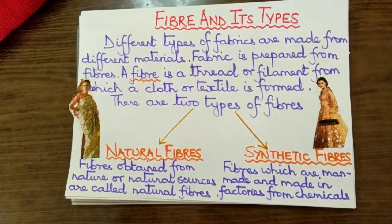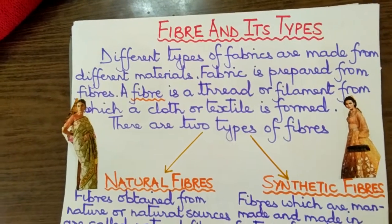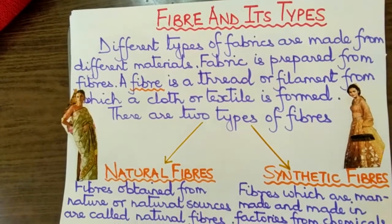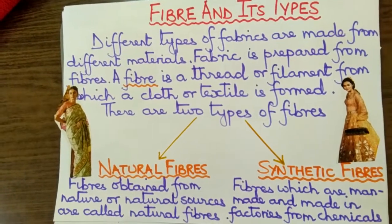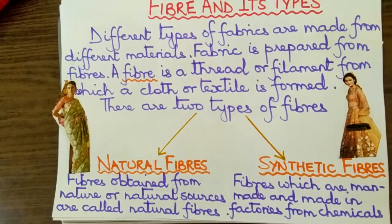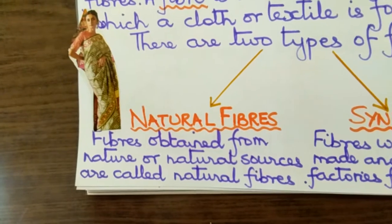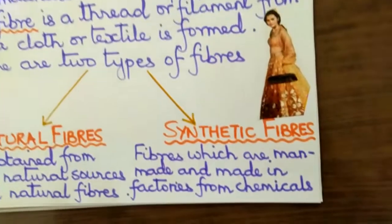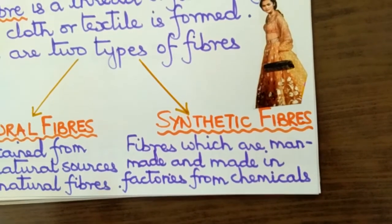Now we are going to know about fiber and its types. Different types of fabrics are made from different materials. Fabric is prepared from fiber. A fiber is a thread or a filament from which a cloth or textile is formed. There are two types of fibers: natural fibers, which are obtained from nature or natural sources, and synthetic fibers, which are man-made and made in factories from chemicals by complex processes.